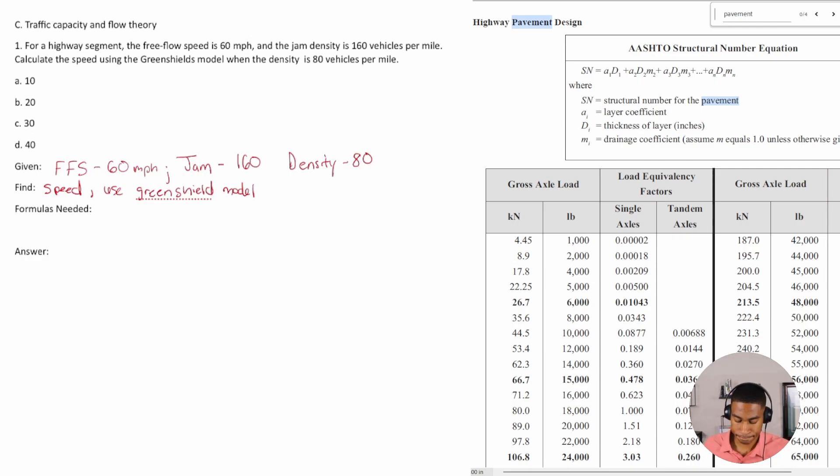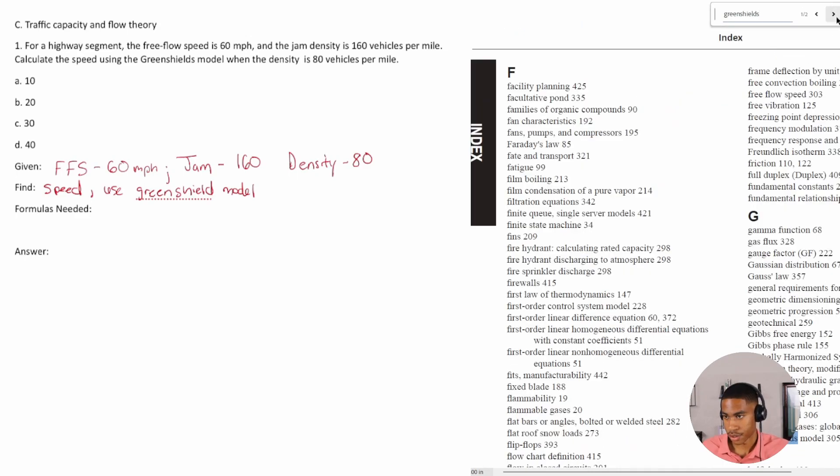All right, so let's do a search, right? Because I'm thinking we're probably going to need some formulas from the FE manual. So I'm just going to do a search in the FE manual for Green Shields. It's only two things that come up in the FE manual.